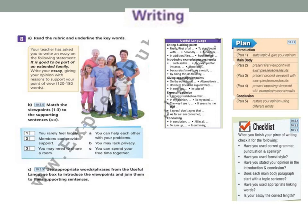How are we to write an opinion essay? Look at the plan. First — introduction: state the topic and give your opinion. Then the main body: paragraph two presents the first viewpoint with examples, reasons, and results. Paragraph three presents the second viewpoint with examples, reasons, and results. Paragraph four presents the opposing viewpoint with examples. Then the conclusion: restate your opinion using different words.